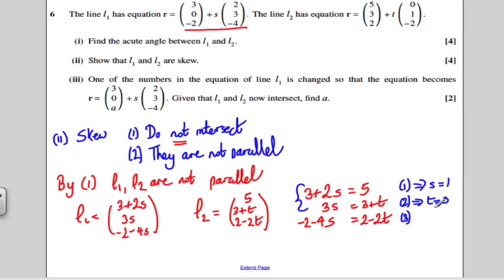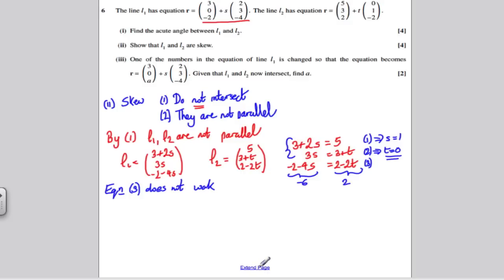Now do these two values for S and T work in the third equation so they're consistent? Well, if I put 1 in here, I would get minus 2, minus 4, and that would be minus 6. And if I put 0 in here, I would get 2 minus 0, which is 2. So they do not work in the third equation. So you could write equation 3 does not work, or is not consistent. And therefore, these lines do not intersect.